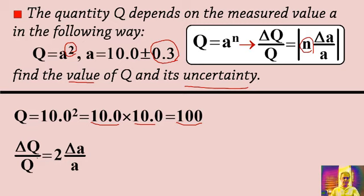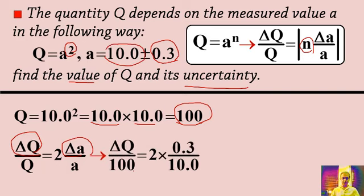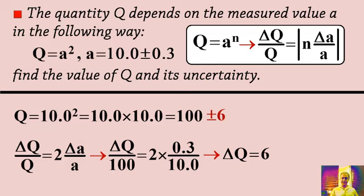I substitute the values — delta q is my goal. The value of q is 100, delta a is 0.3, and a has the value of 10.0. Substituting all the values, I find delta q is equal to 6. So I can write q is equal to 100 plus or minus 6.